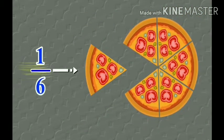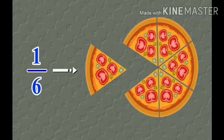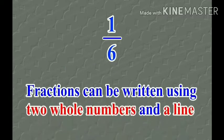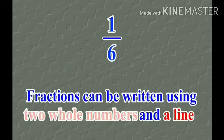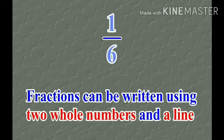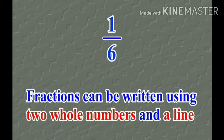Now I will tell you one more thing. This one part is called one upon six, or one sixth — this is a fraction. A fraction can be written using two whole numbers and a line. Here, one and six are the two whole numbers, and in the middle of these two numbers there is a line.